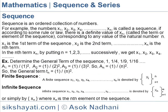Sequence. Sequence is an ordered collection of numbers. For example, the numbers X1, X2, X3, X4, up to XN is called a sequence. If according to some rule or law, there is a definite value of XN called the term or element of the sequence, corresponding to any value of the natural number N.